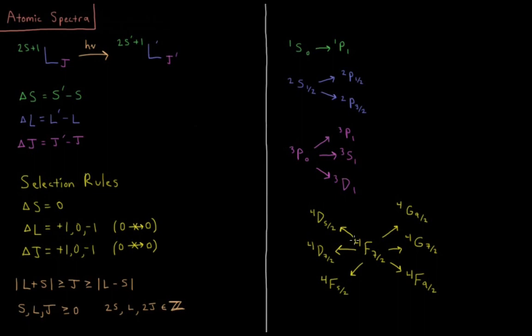And then our most complicated example, if we had quartet f7 halves, j equals 7 halves, s is going to equal 3 halves, and l equals 3 for f. So we can go to l equals 3 plus 1, 3 plus 0, or 3 minus 1, 4, 3, or 2, which would be a g, f, or d term symbol. Delta j equals plus or minus 1, or 0, so 7 halves, we can go up to 9 halves, we can stay at 7 halves, or we can go down to 5 halves.